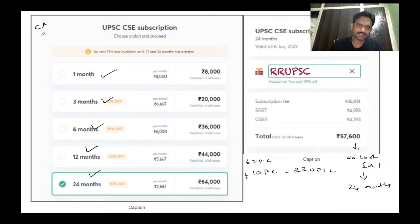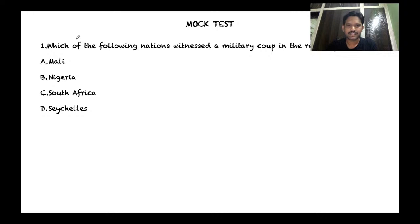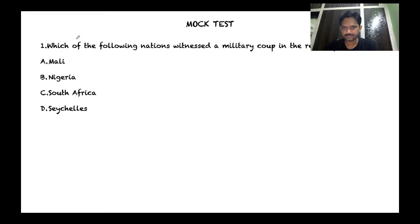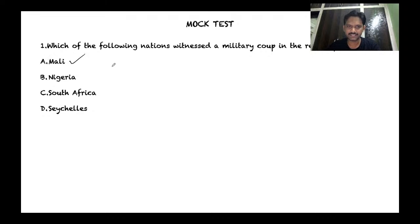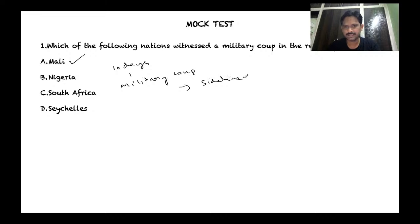This will be a mock test on current affairs with 25 questions. First question: which of the following nations witnessed a military coup in the recent period? The answer is Mali. It happened very recently — the military staged a coup and sidelined the elected government.